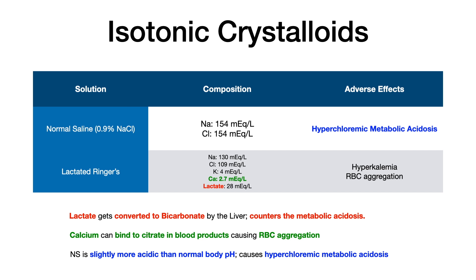For normal saline, the big adverse effect is that it can cause hyperchloremic metabolic acidosis. All you need to know is that because normal saline is slightly more acidic than the normal body pH, when you're giving somebody normal saline, you run the risk of hyperchloremic metabolic acidosis. And so for this reason, when aggressive fluid resuscitation is needed, lactated ringers is actually a pretty good solution.